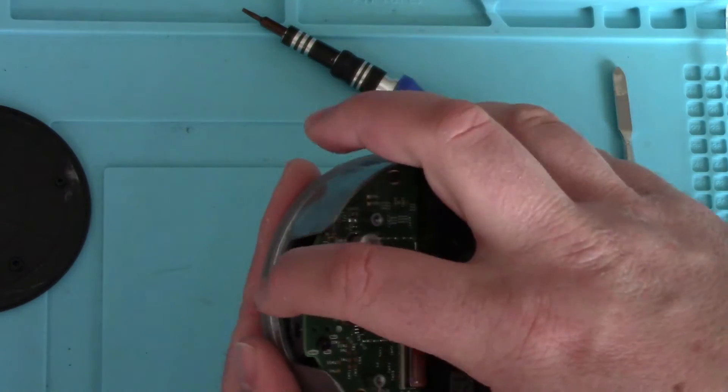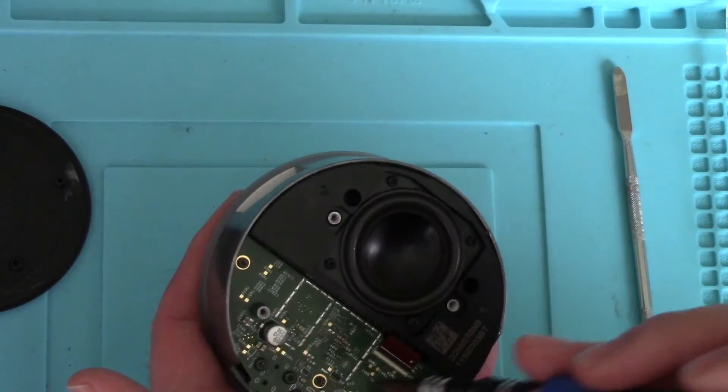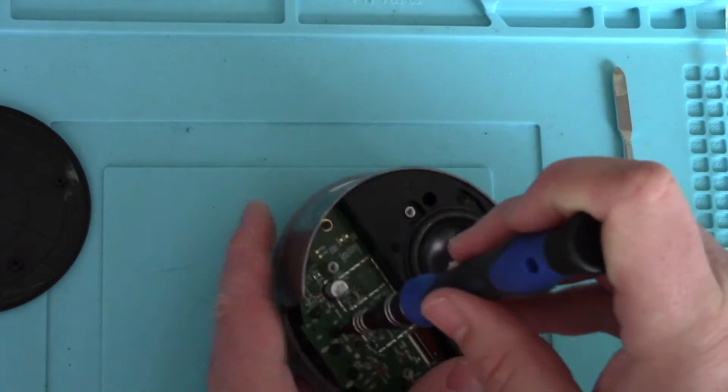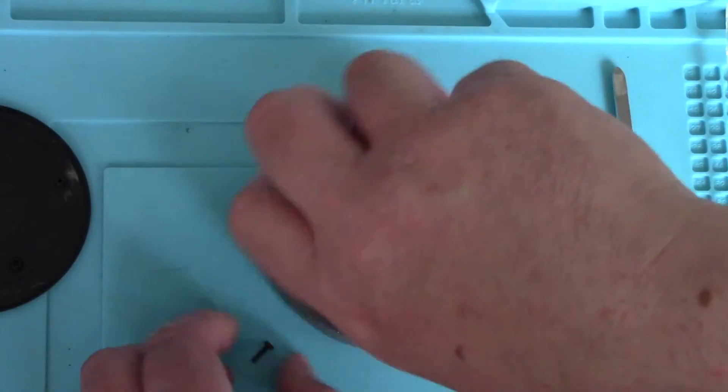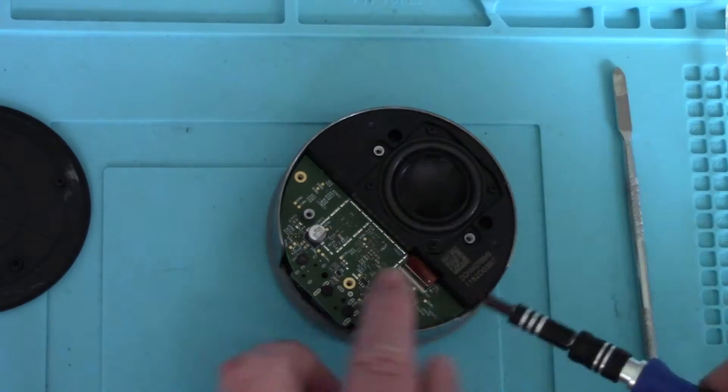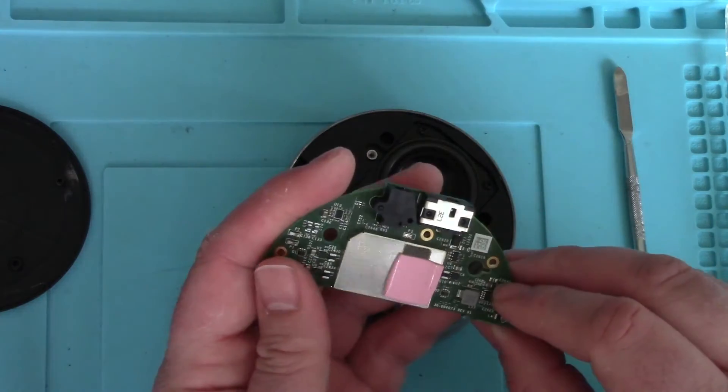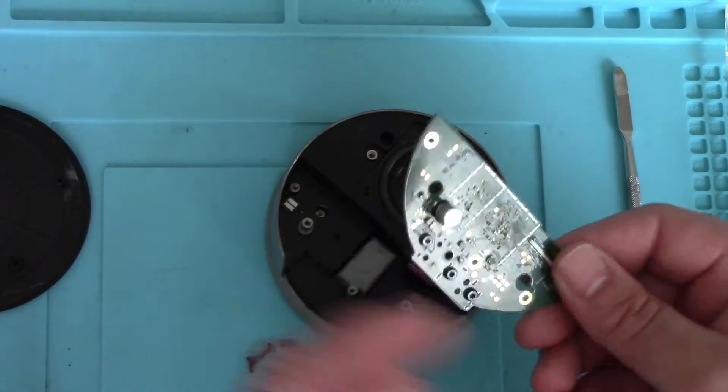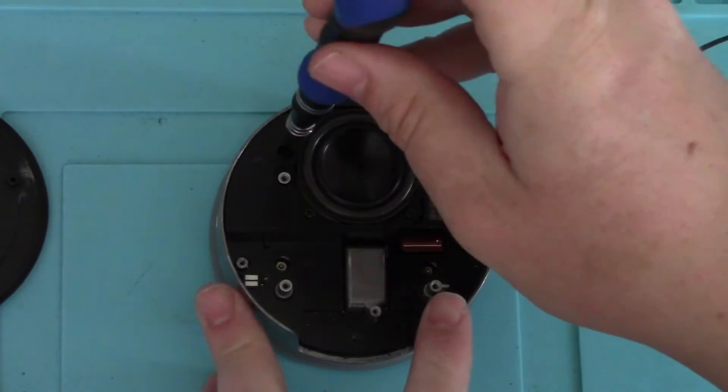Now this is the brains of it all here. I say brains, I say it very loosely. I'm just going to undo these screws here and remove this part if I can. There's also a little ribbon connector here. That's the main board out. I can just throw that away. I'm just going to remove the top piece.